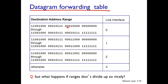Looking at the address ranges more carefully: for the first range, 21 bits are the same. For the next range, 24 bits are the same. For another range, 24 bits are the same, and 2 bits are the same in a sub-range.